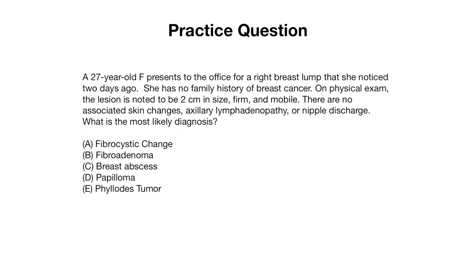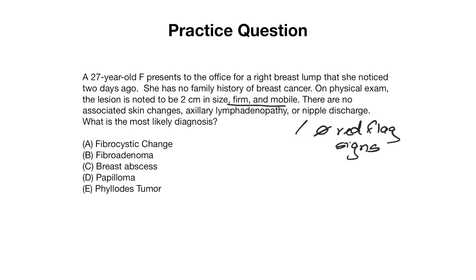Let's run through a practice question. Here we have a 27-year-old female who presents to the office for a right breast lump she noticed two days ago. She has no family history of breast cancer. On exam the lesion is two centimeters in size, firm, and mobile. There are no associated skin changes, axillary lymphadenopathy, or nipple discharge — so there are no red flag signs. What is the most likely diagnosis?